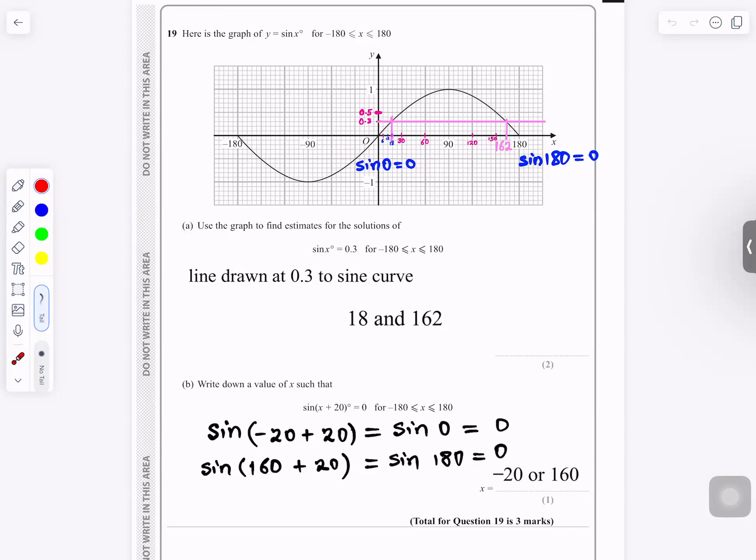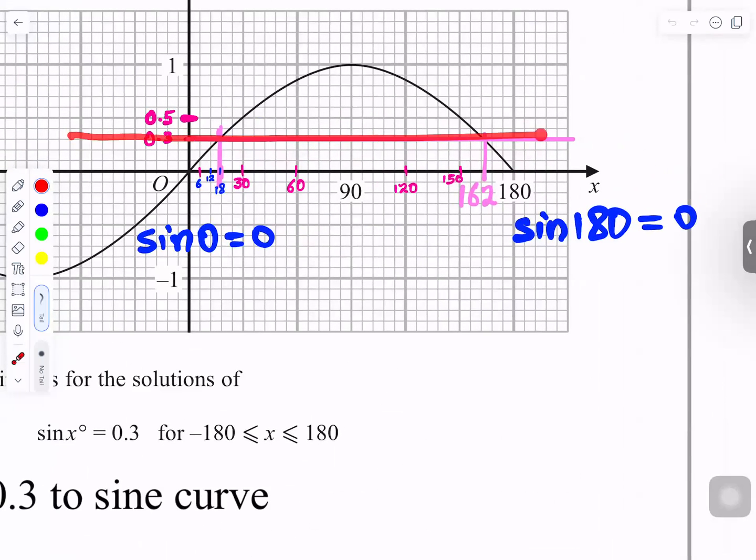Question 19: Here is a graph of y equals to sine x from minus 180 to 180. Use the graph to estimate. Find estimate for the solution. You draw a line at 0.3.